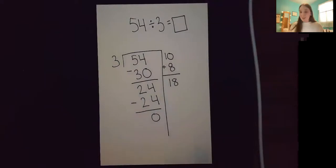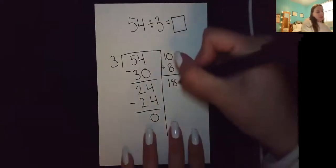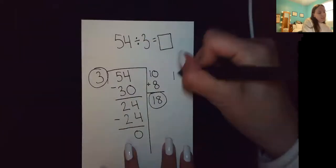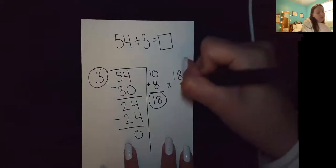Before I write that down as my permanent answer, I'm going to check my answer by multiplying. So I'll multiply my answer times my divisor. So 18 times three.